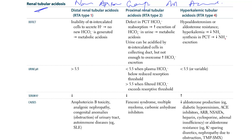There are three types: type 1, type 2, and type 4. We have distal renal tubular acidosis, RTA type 1; proximal renal tubular acidosis, RTA type 2; and hyperkalemic tubular acidosis, RTA type 4.